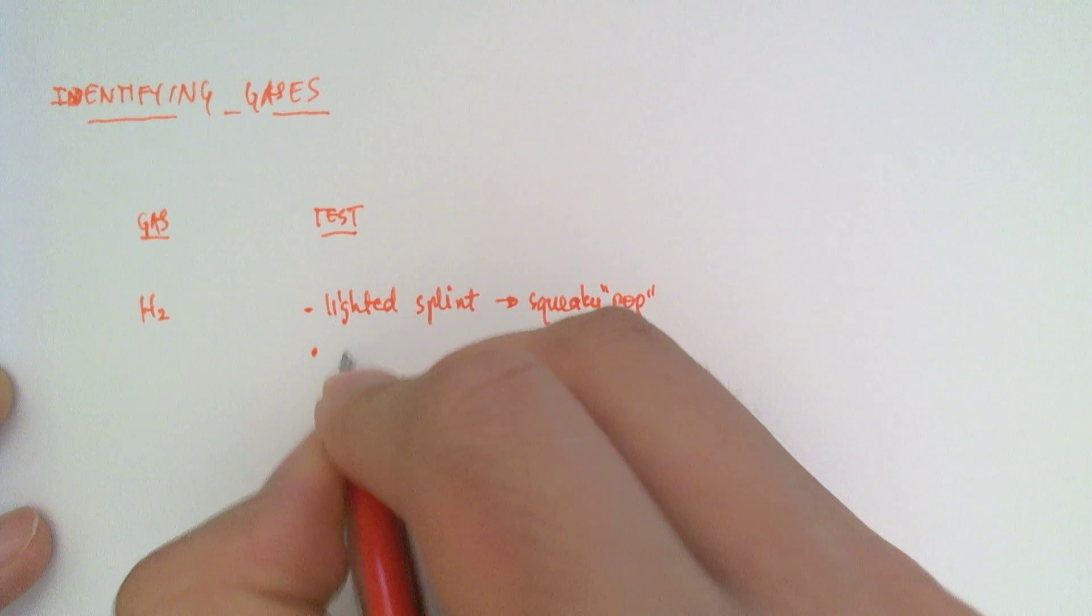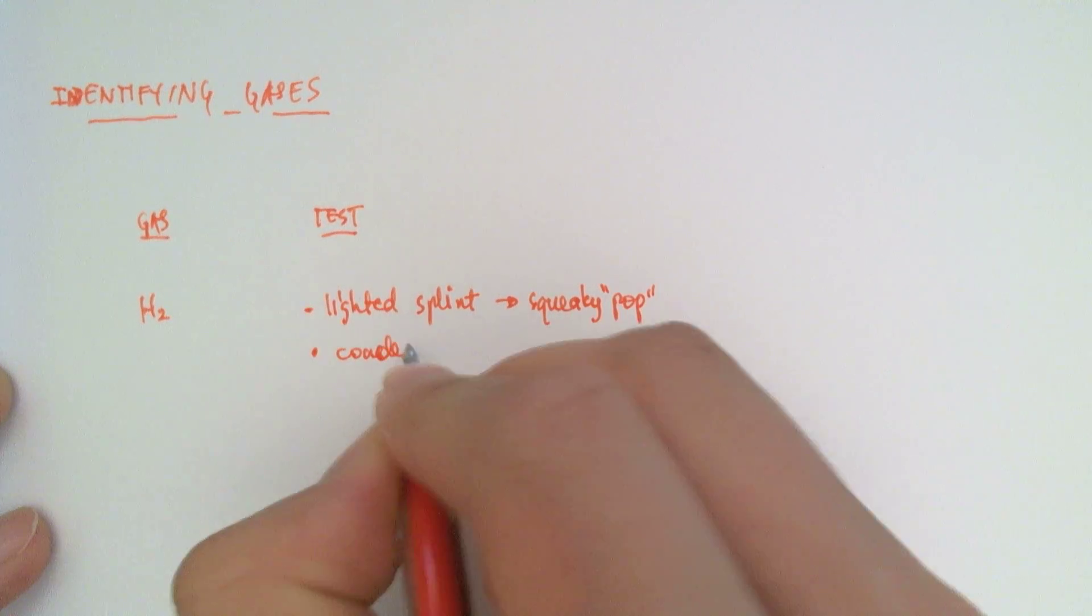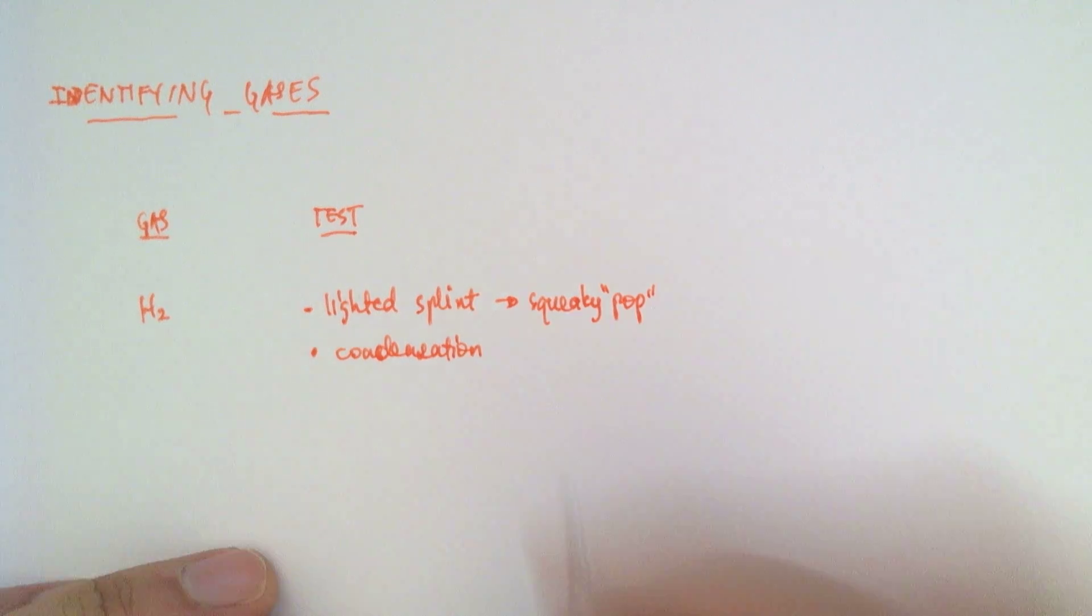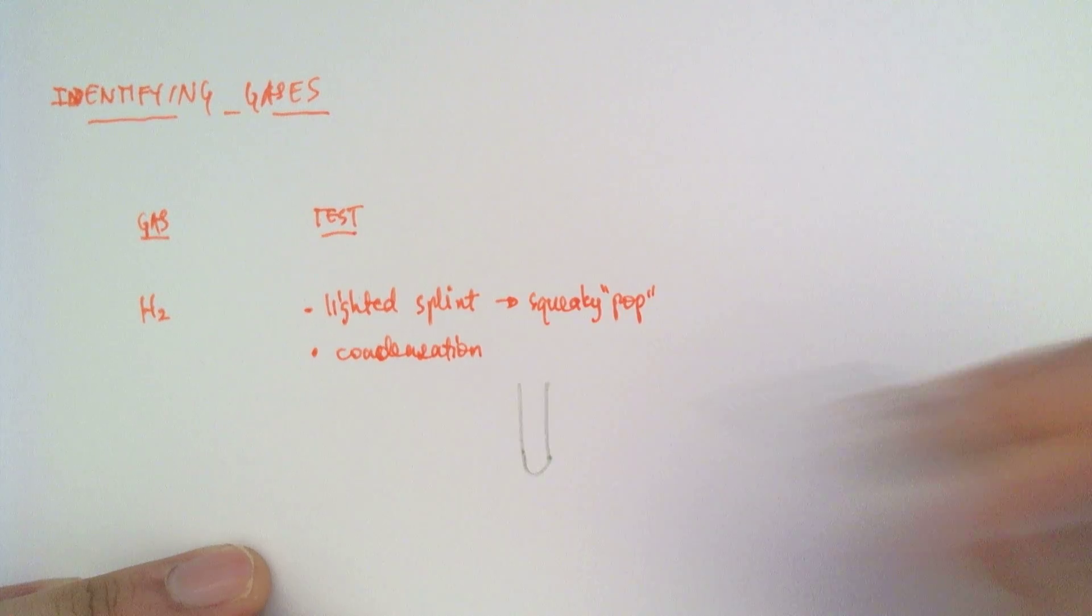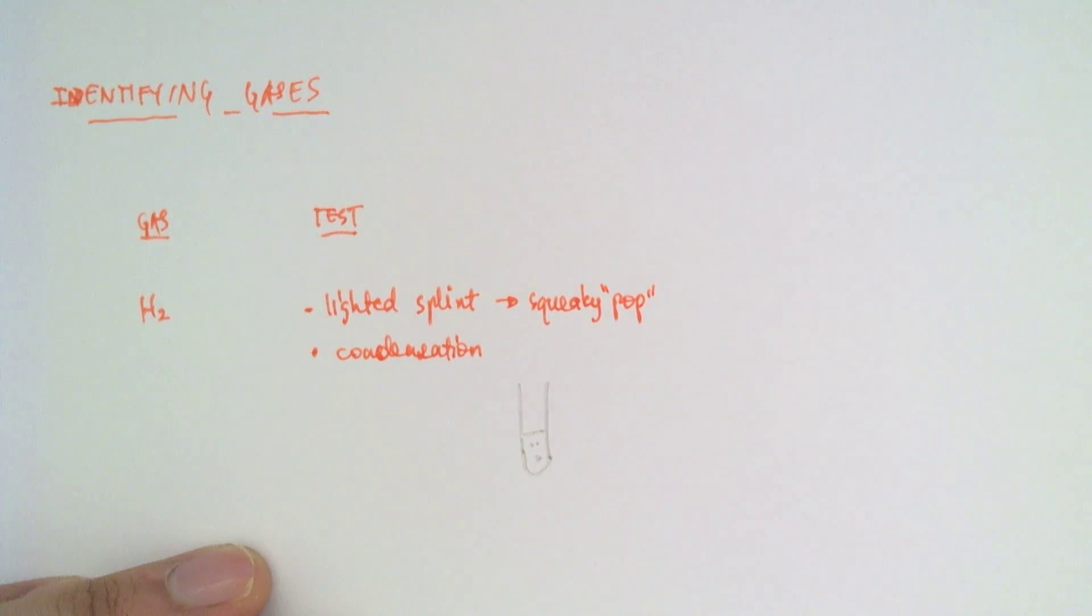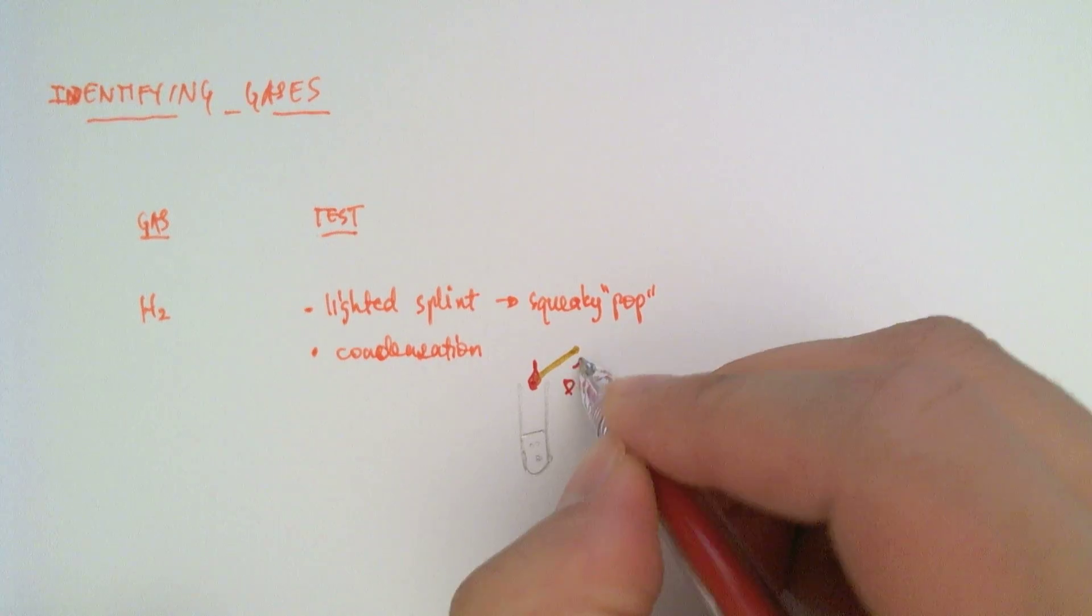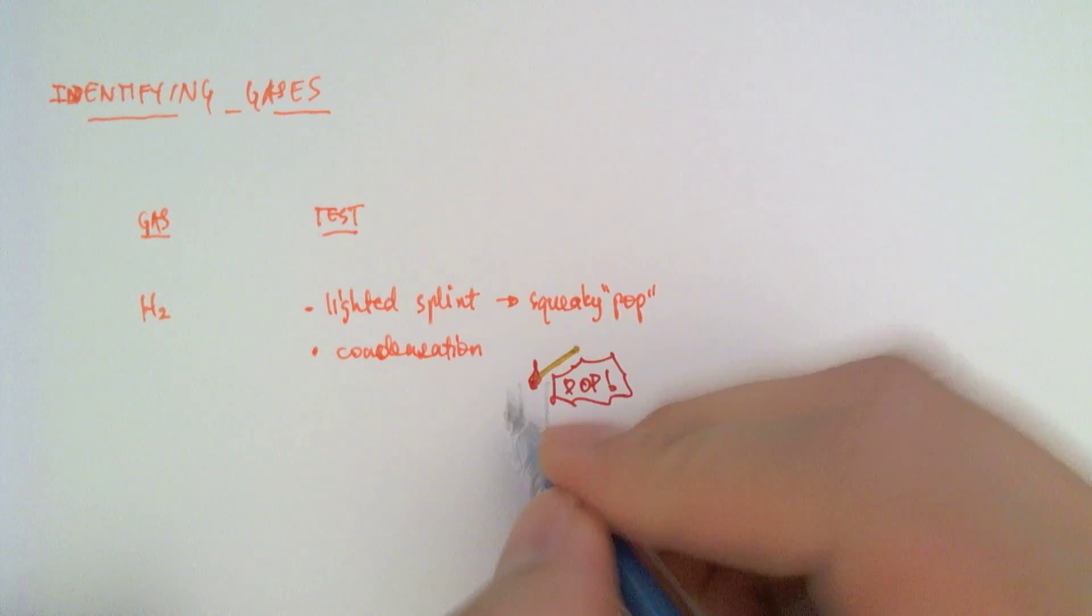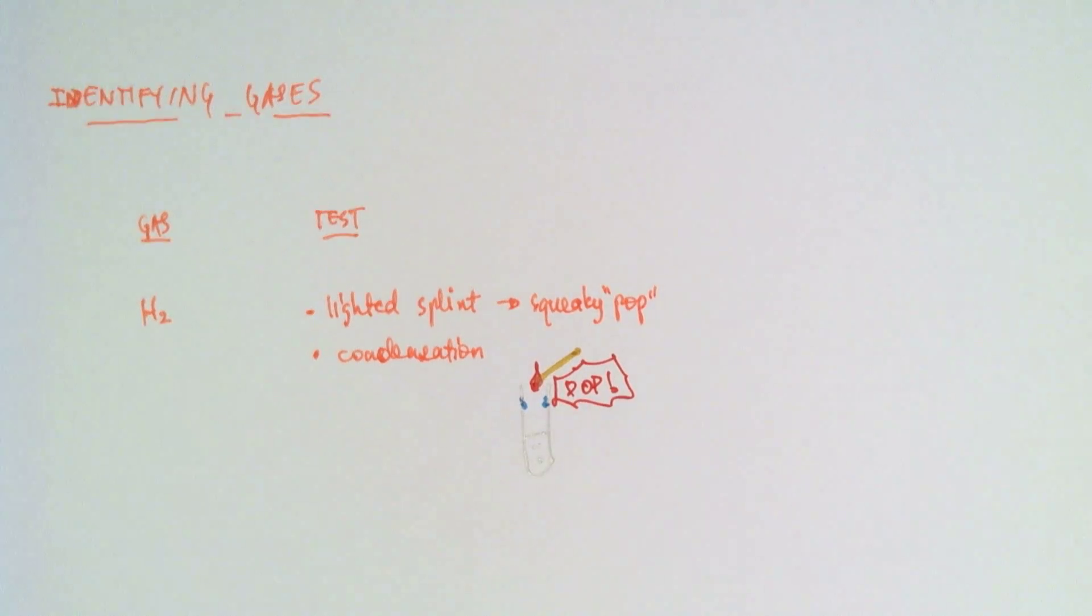And we might even get some condensation on the test tube. So let me just draw that real quick. You have your action taking place here and you're going to take a splint which is lighted, and that will give us a pop sound with perhaps some condensation on the edge of the test tube.